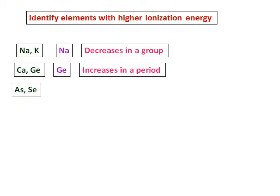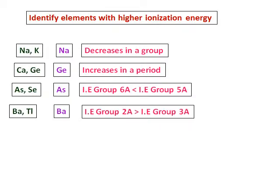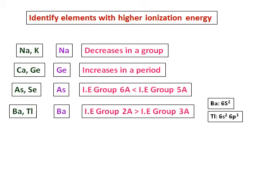Between arsenic and selenium, arsenic will have higher ionization energy. Looking at the trend, ionization energy of group 6A is less than that of group 5A. For barium and tellurium, barium will have higher ionization energy because ionization energy of group 2A is always greater than group 3A due to the electronic configuration 6s², where a paired electron must be removed.